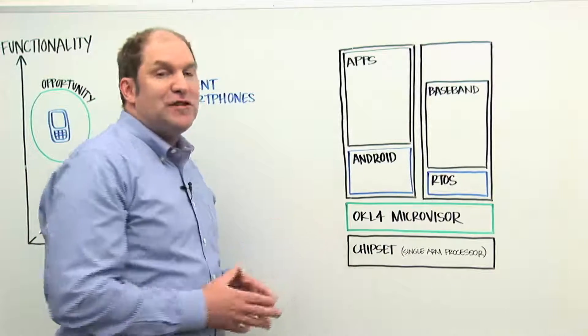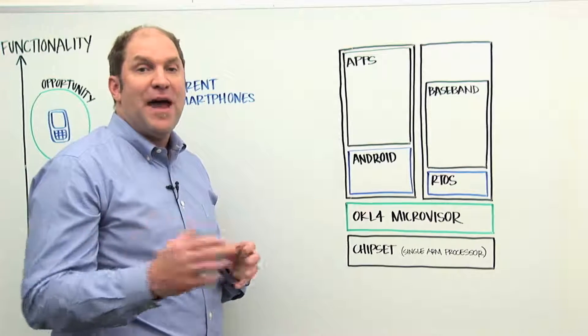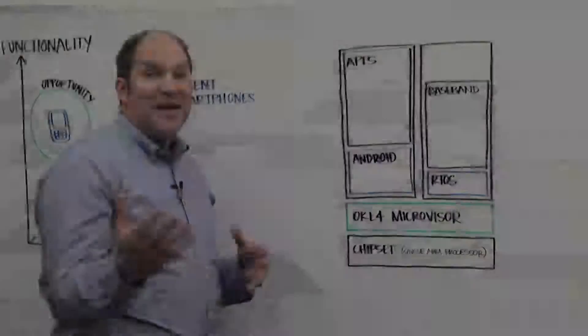Not only is the chipset less expensive because of the requirement for only a single ARM processor, but that category of chipsets tends to be compatible with less expensive LCDs, less expensive batteries, and other components that contribute significantly to the mobile phone cost.